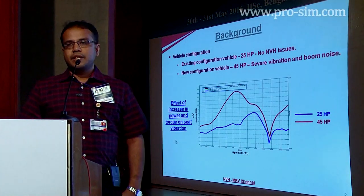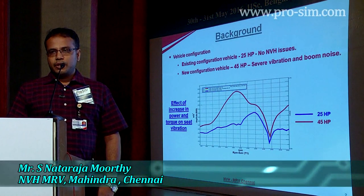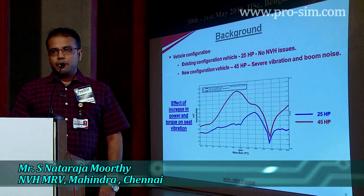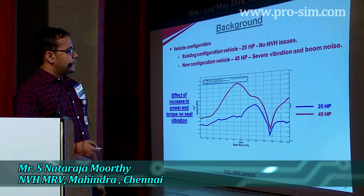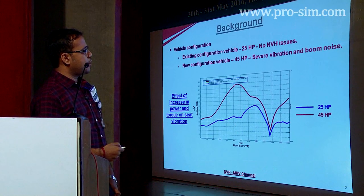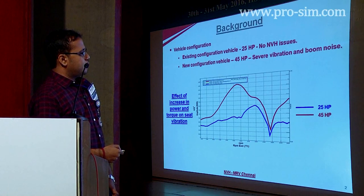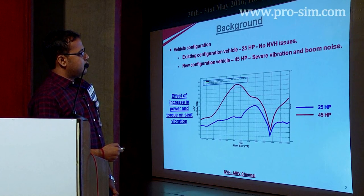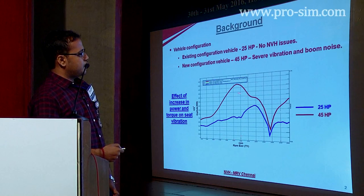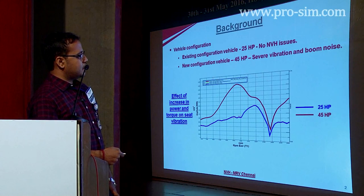The power of our vehicle was increased from 25 HP to 45 HP due to customer requirement. With the increase in power, the vibration level in the seat also increased. You can see this is the 45 HP vehicle and this is the 25 HP vehicle. With the increase in power, the vibration levels were higher at 2000 RPM at 4th gear wide open throttle condition. Our target is to achieve the same level as the 25 HP.